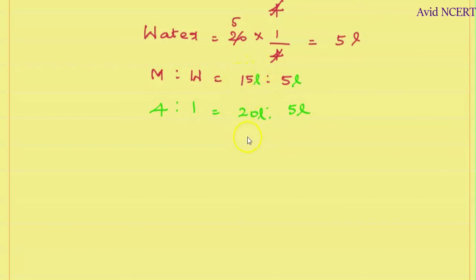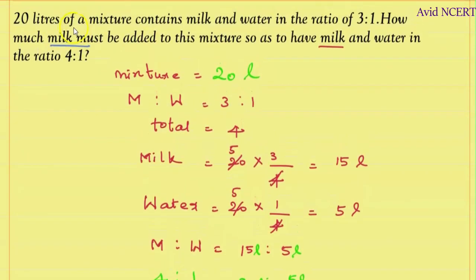Initially there was 15 liters of milk, and now it should be 20 liters. So 20 liters minus 15 liters equals 5 liters, which means 5 liters of milk should be added.